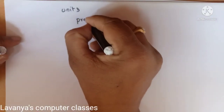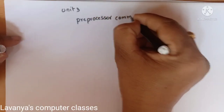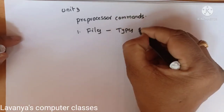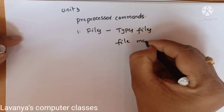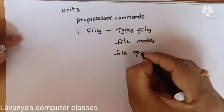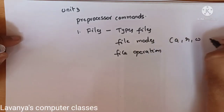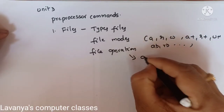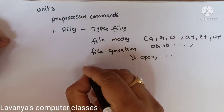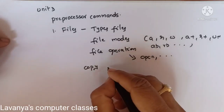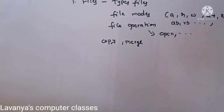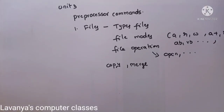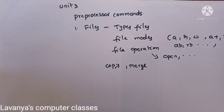In Unit 3, the chapters are preprocessor commands — very important — then files. In files: what is a file, types of files, file modes (a mode, append mode, read mode, w mode, a+, w+, r+, ab+, wb+, rb+, etc.), and file operations such as fopen and fclose. Programs include: copy the content of one file into another file, and merging two files — these two are compulsory programs.